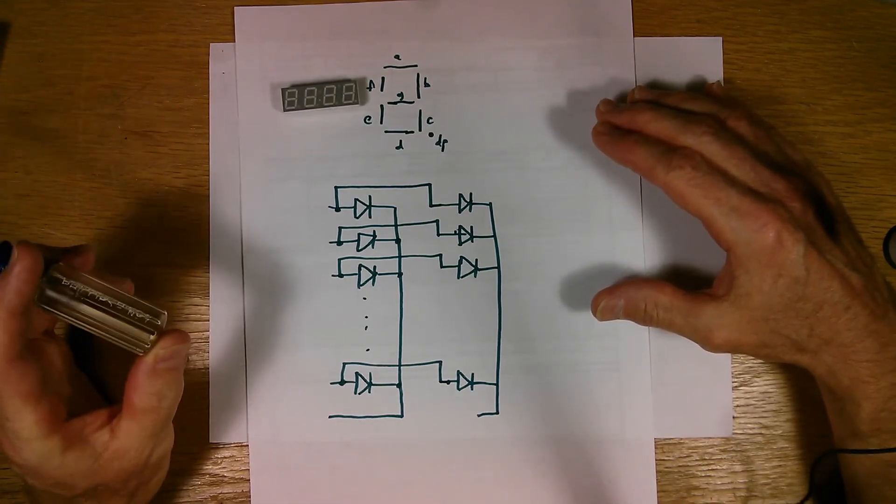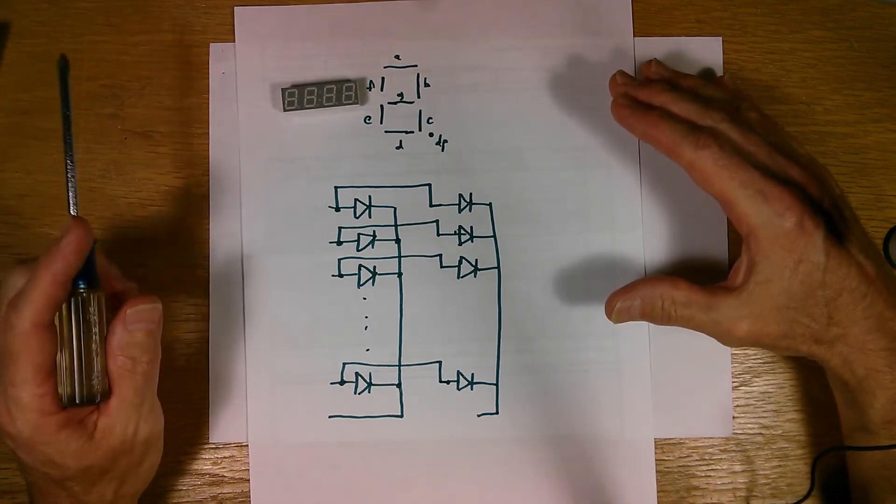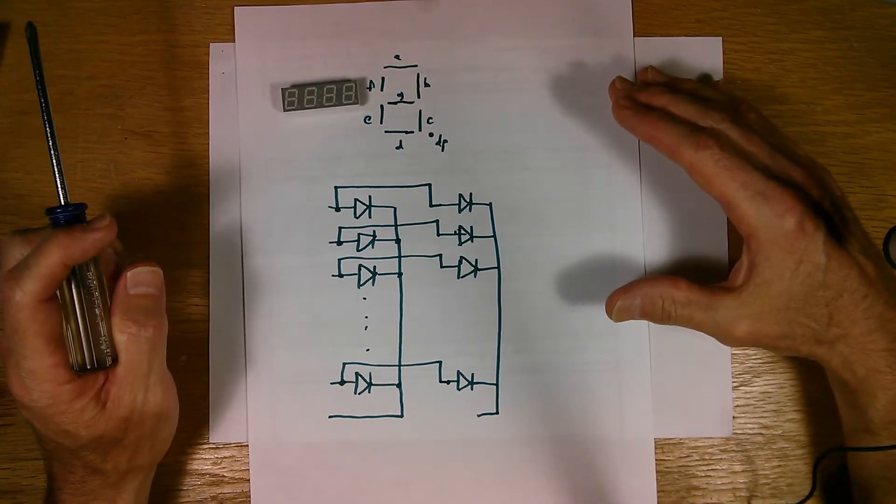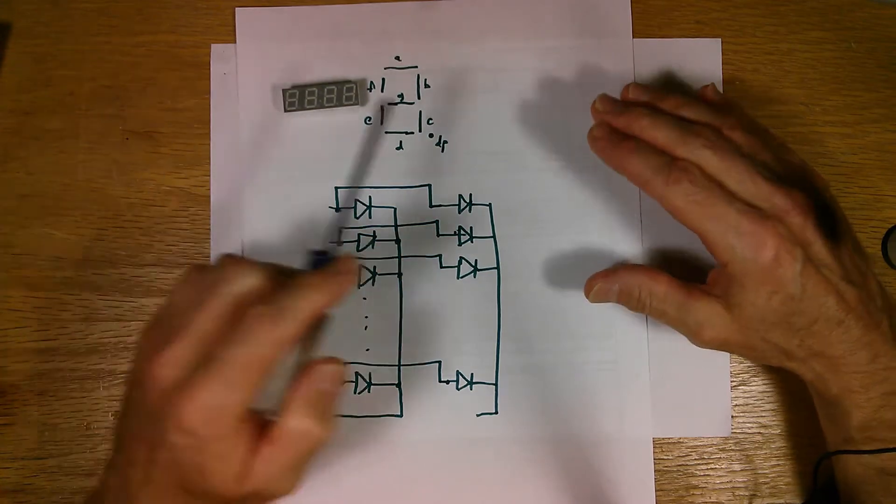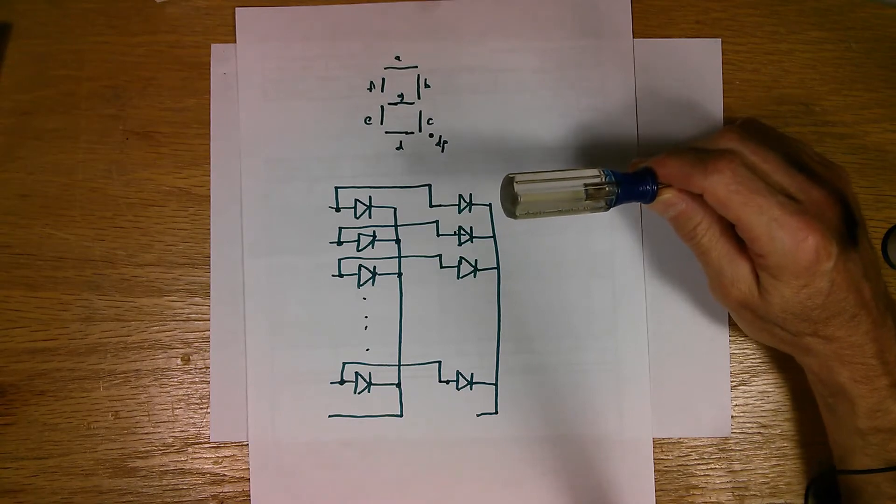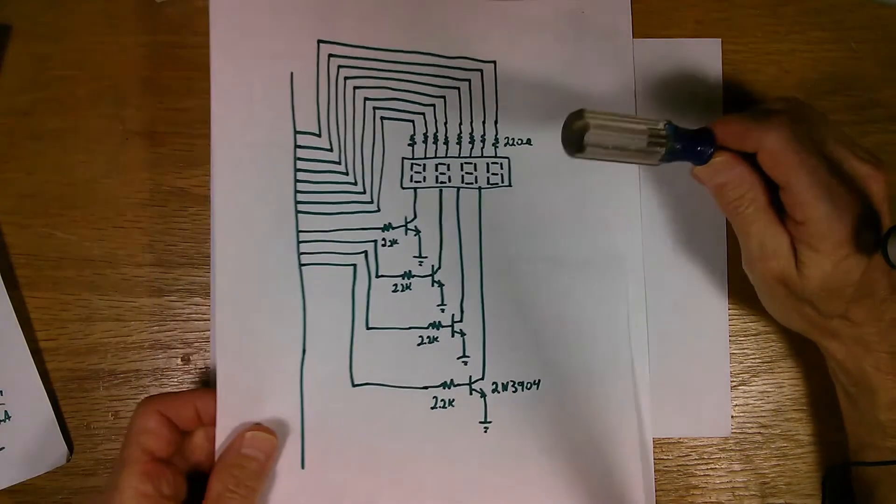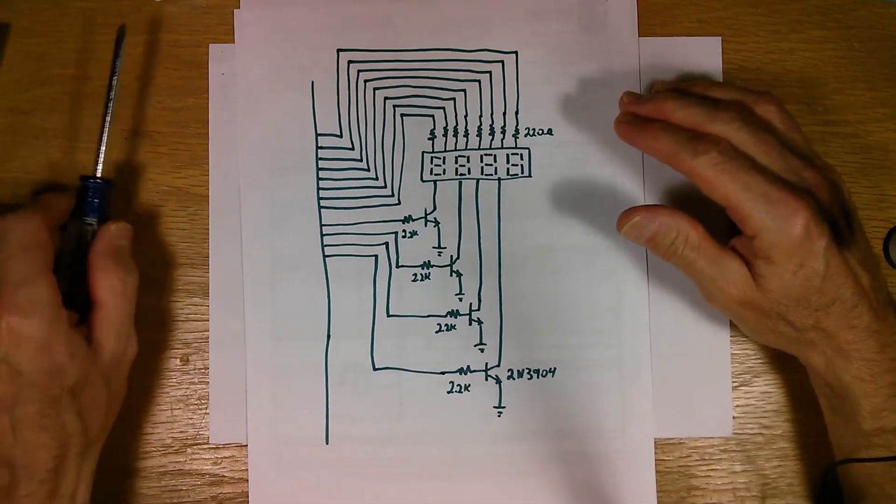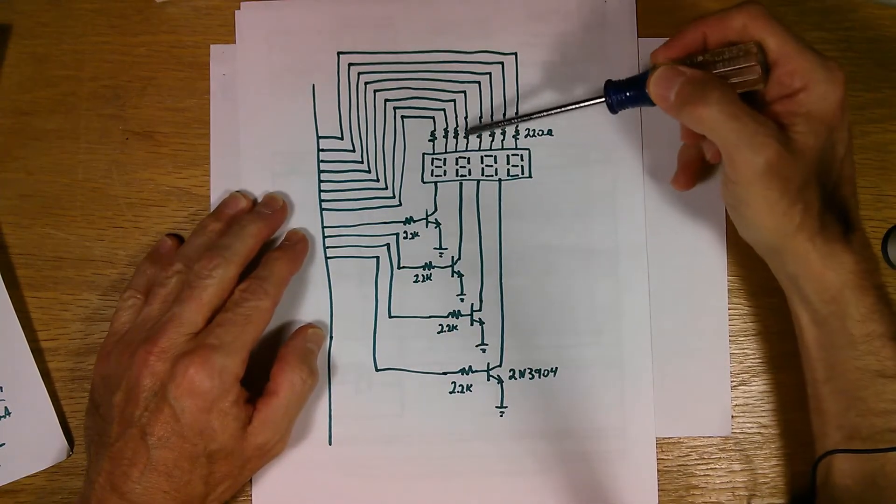So on a typical Arduino, a simple Arduino like that, we've got some 20 odd pins that are available for driving this display. And that's more than enough to make this display work. So the way it's done is we'll hook it up like this. Here's the microcontroller. Here's the display and all the digits.